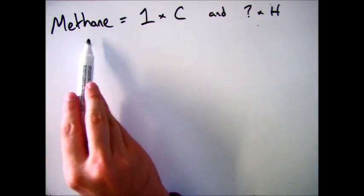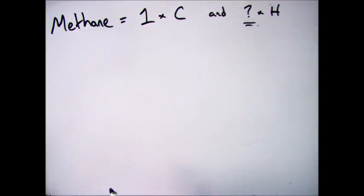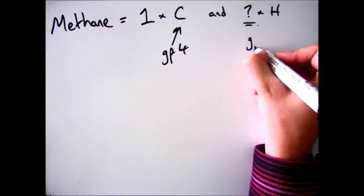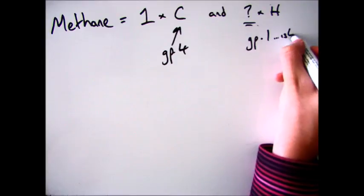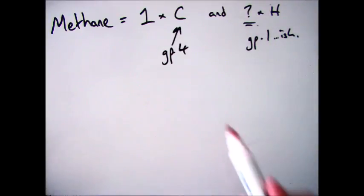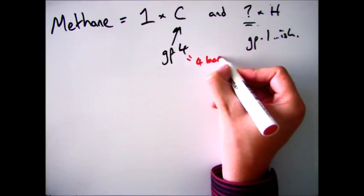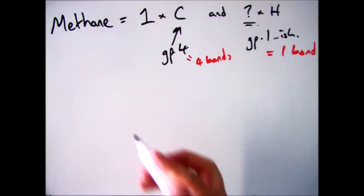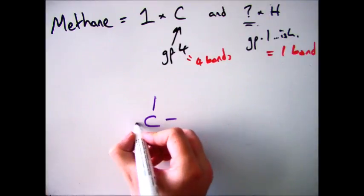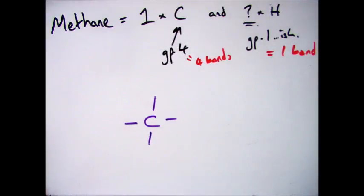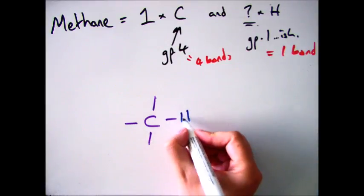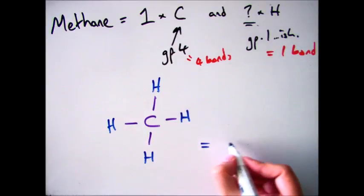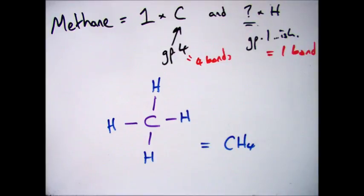Let's have a look at an example. So if you had methane, and you knew methane had one carbon and the rest hydrogen, the first thing is to look at the groups they're in. Carbon is in group 4, and hydrogen is technically in group 1 because it's got 1 in the outer shell. So carbon needs to gain 4 electrons and make 4 bonds. Hydrogen needs 1 electron, so it can make 1 bond. Because carbon can make 4, it needs 4 hydrogens to complete its 4 bonds. So you have CH4.